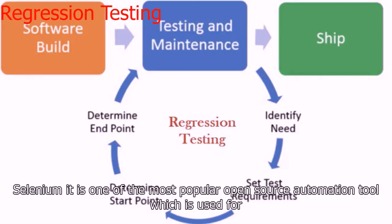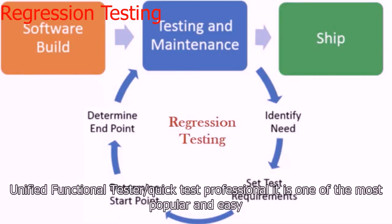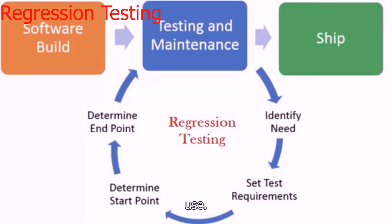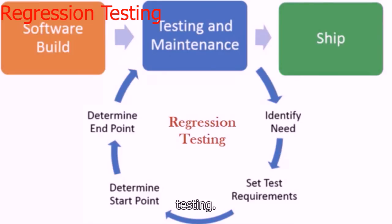Some of the most popular automation tools used in the market today are: First, Selenium — one of the most popular open source automation tools used for regression testing on web applications. Second, Unified Functional Tester, also known as QuickTest Professional — QTP is the older name; it is a licensed tool but very easy to understand and use. Third, Rational Functional Tester — a very popular IBM tool used for doing regression testing.